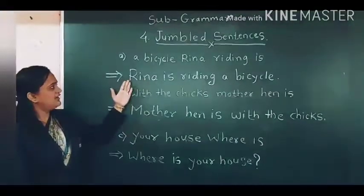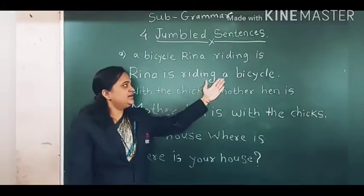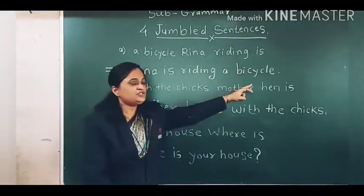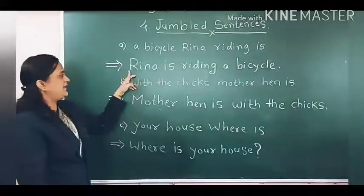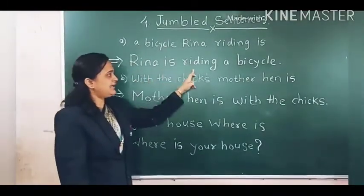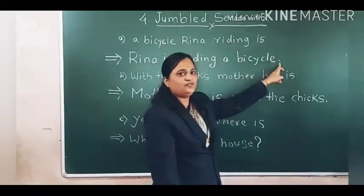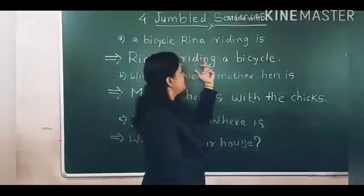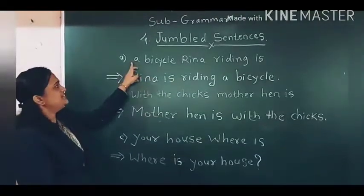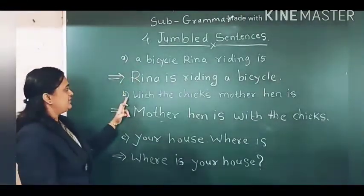Now see here the corrected version: 'Rina is riding a bicycle.' Full stop. Rina starts with a capital letter. 'Rina is riding a bicycle.' That's a full stop. It has a proper meaning. It is a normal, proper sentence.